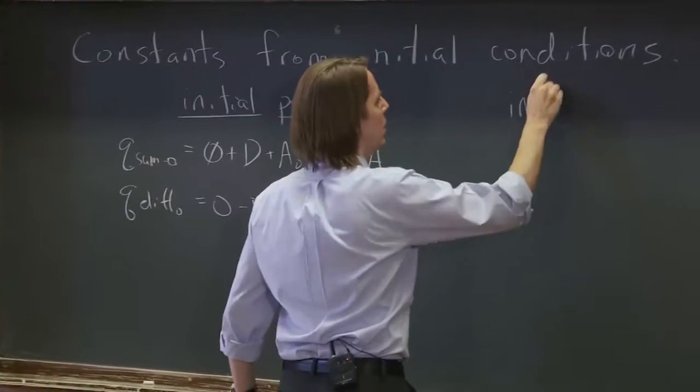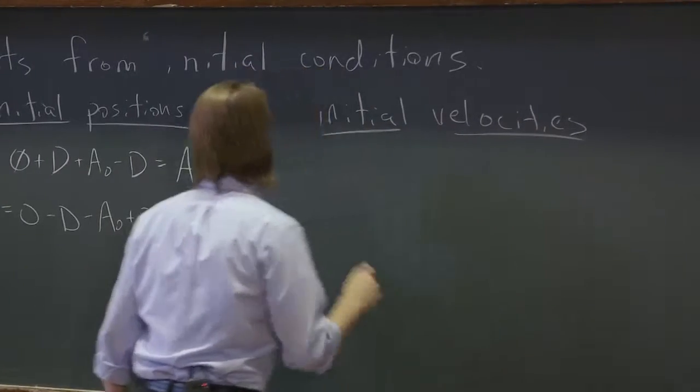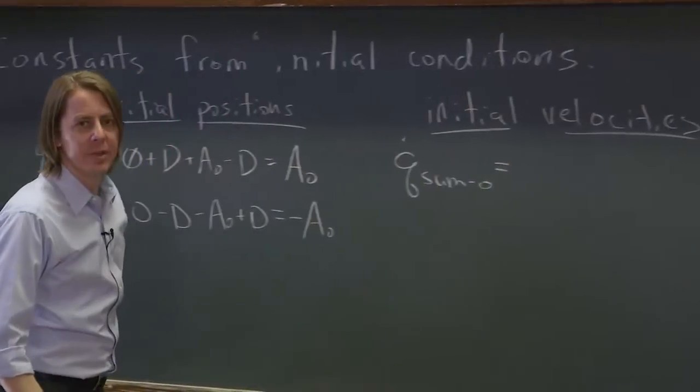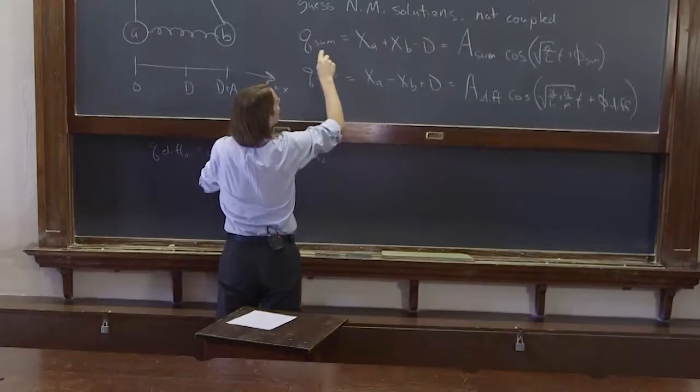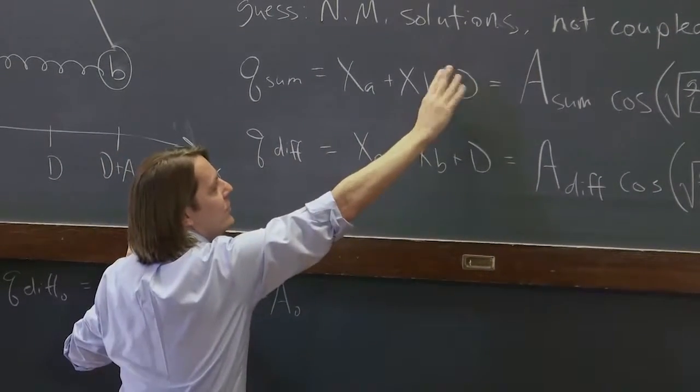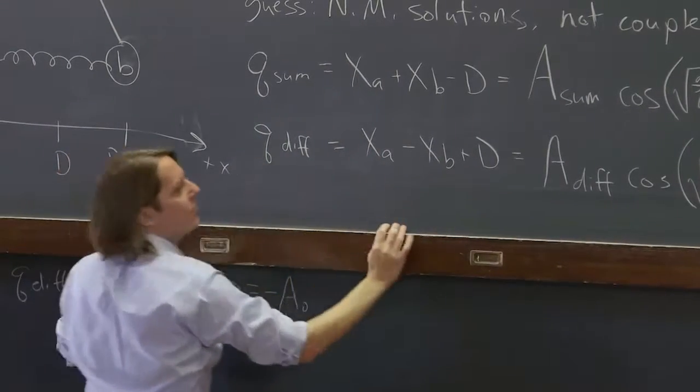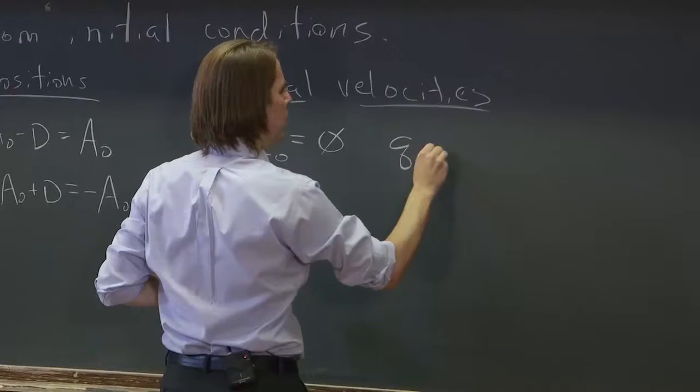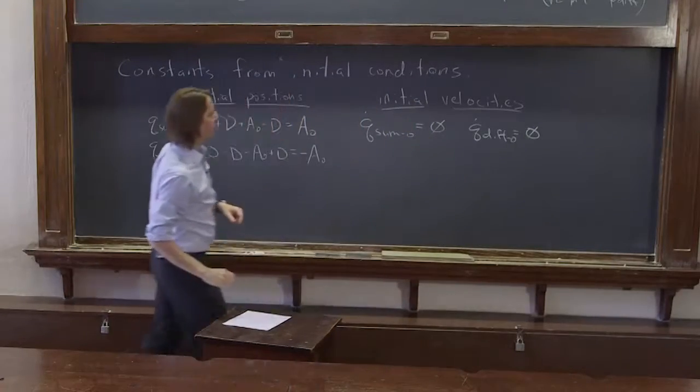And we could do initial velocities. q_sum_0_dot, the time derivative is 0. If we take the time derivative, q_sum_dot would just be x_A_dot plus x_B_dot, just the velocities. The time derivative is 0. So since these velocities are 0, both initial velocities are 0. q_diff_0_dot also equals 0.